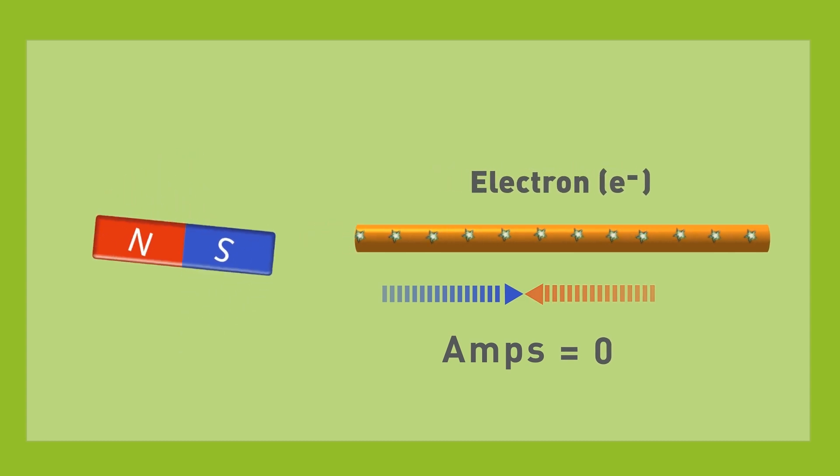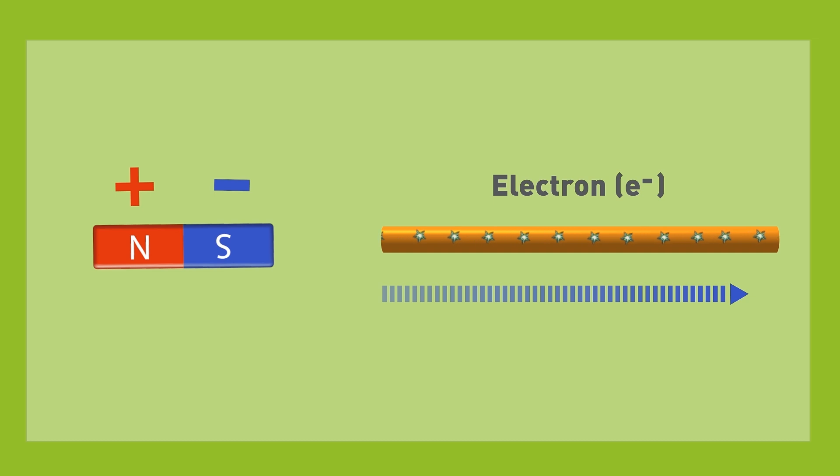If we further rotate the magnet another 90 degrees, we have the south pole of the magnet next to the wire. This negatively charged section of the magnet is now repelling the electrons and they are moving in the opposite direction away from the magnet.